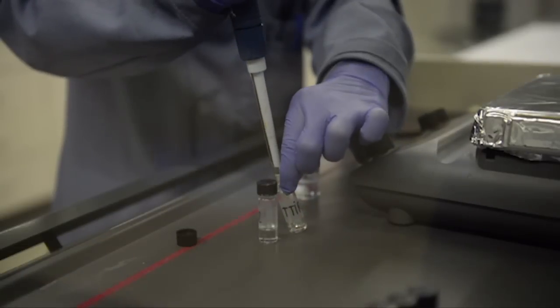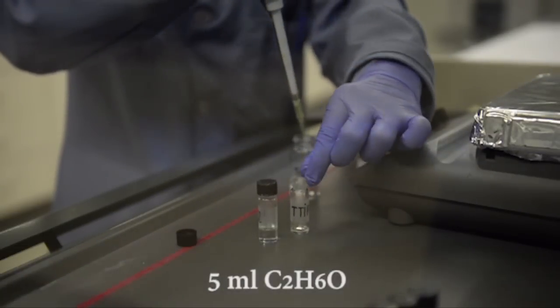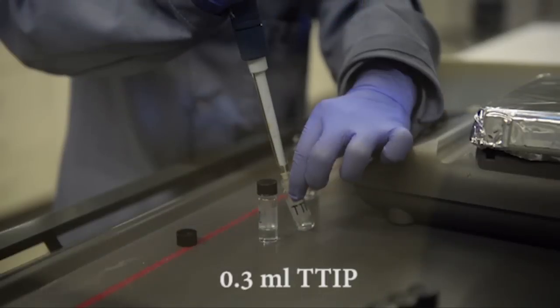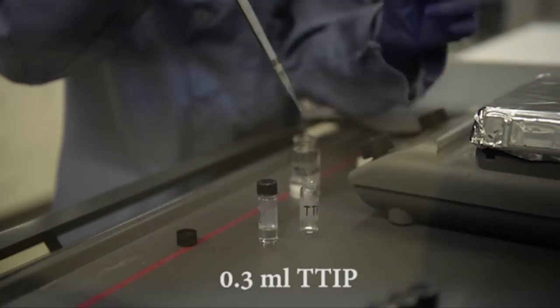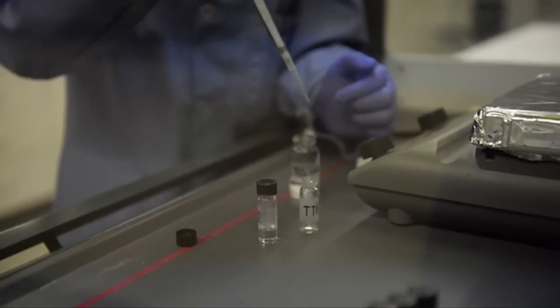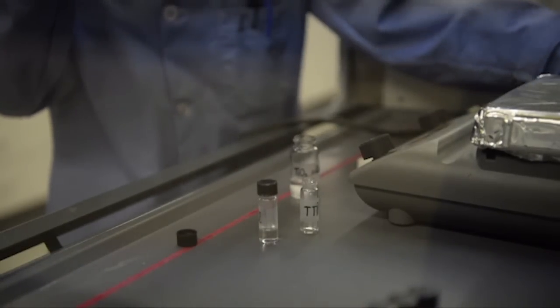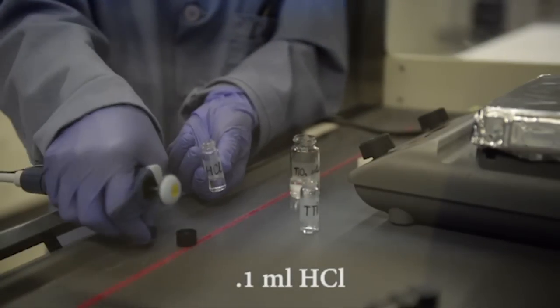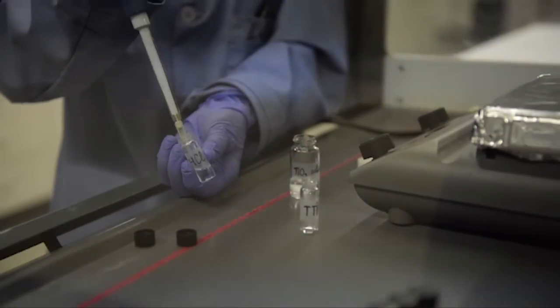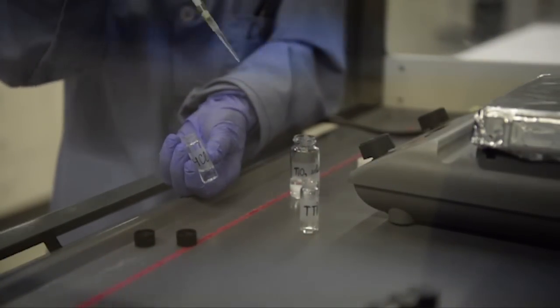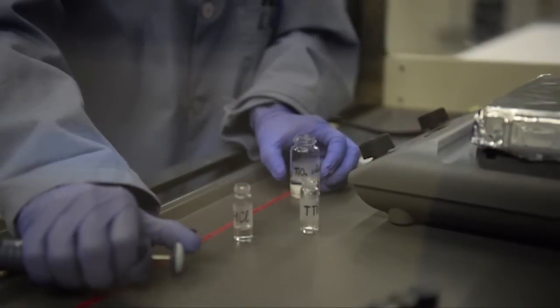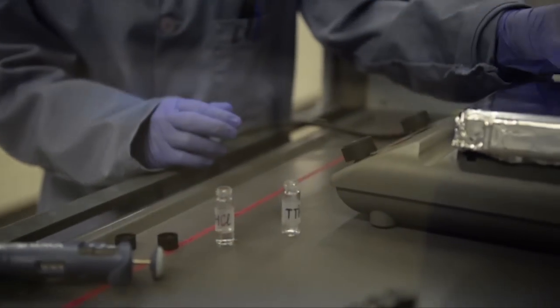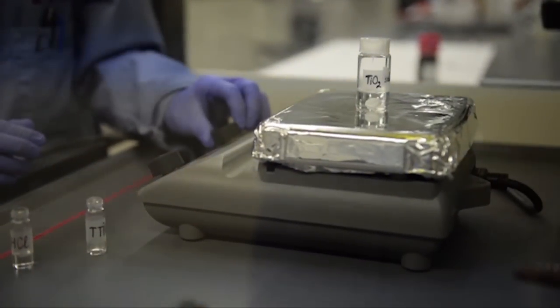To prepare the titania solution, we use 5 milliliters of ethanol, 3 milliliters of titanium isopropoxide, and 0.1 milliliters of hydrochloric acid. After adding the three together, we let the solution stir at room temperature for about 10 minutes.